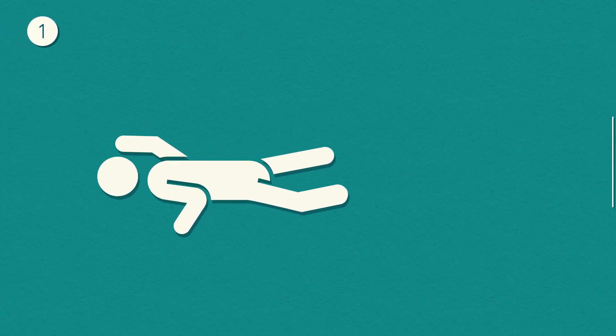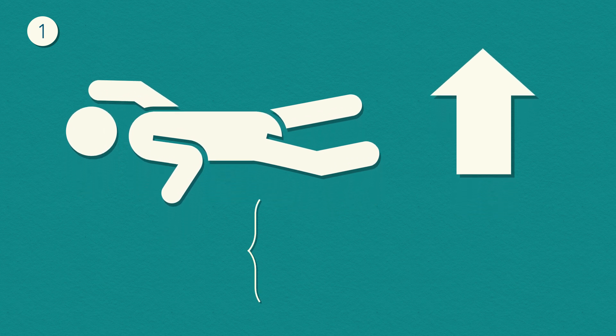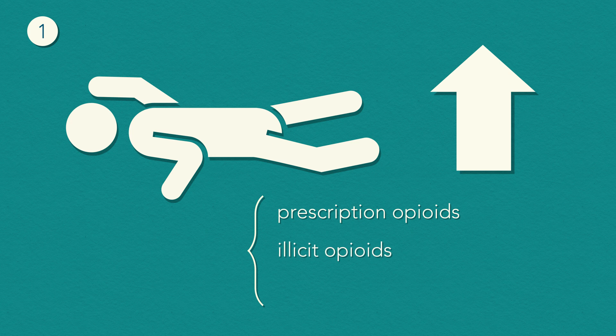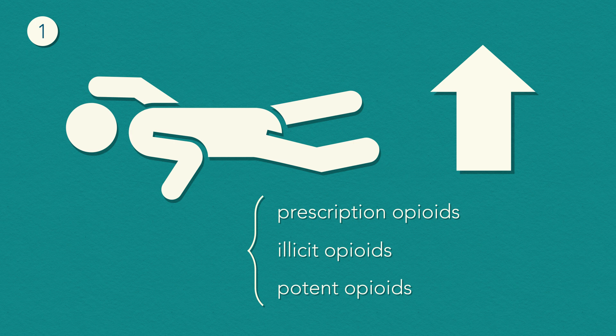First, opioid overdoses are rising quickly. People can overdose on prescription opioids such as oxycodone or illicit opioids such as heroin. Sometimes illicit drugs are also laced with potent opioids like fentanyl.